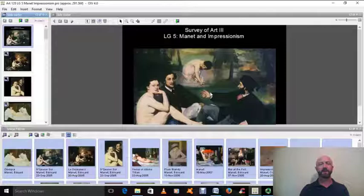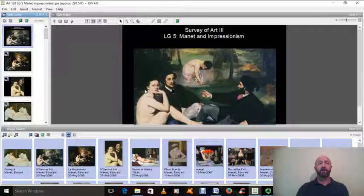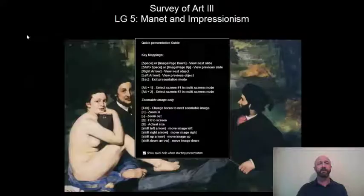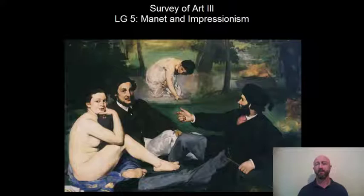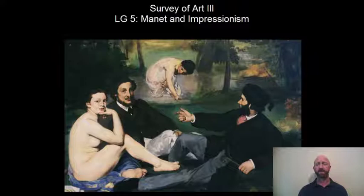Hi everyone. Welcome back to lecture guide number five on Édouard Manet and the Impressionist painters. Today we're moving into the realm of modern art. A lot of people think that modern art is synonymous with abstraction in the realm of painting and sculpture, and in a lot of ways it is. But we want to start back a little further and talk about modernism as a historical movement or historical time period.